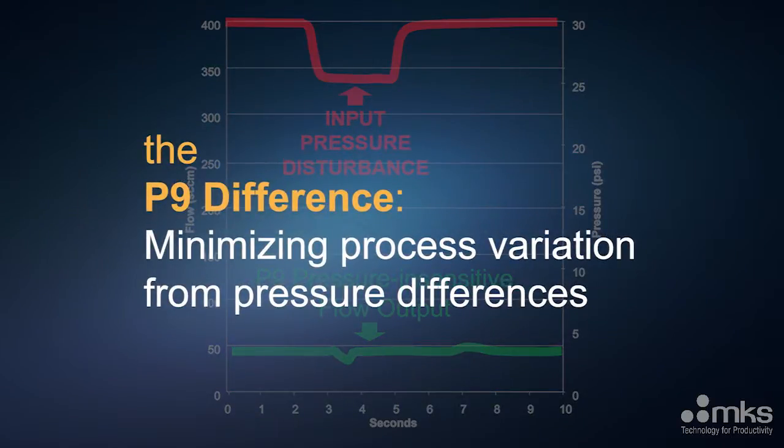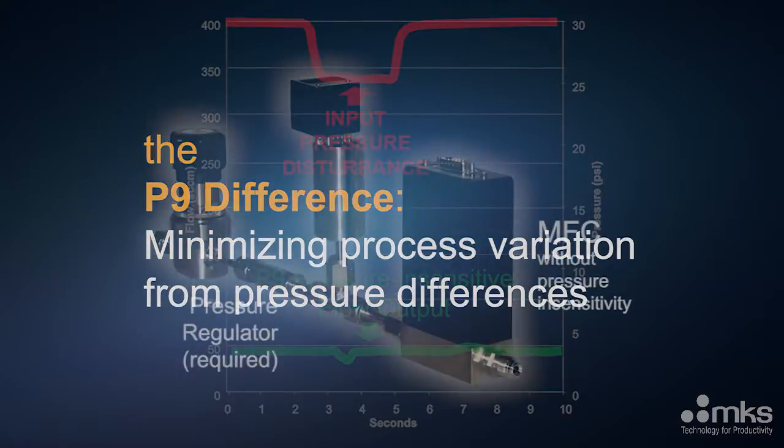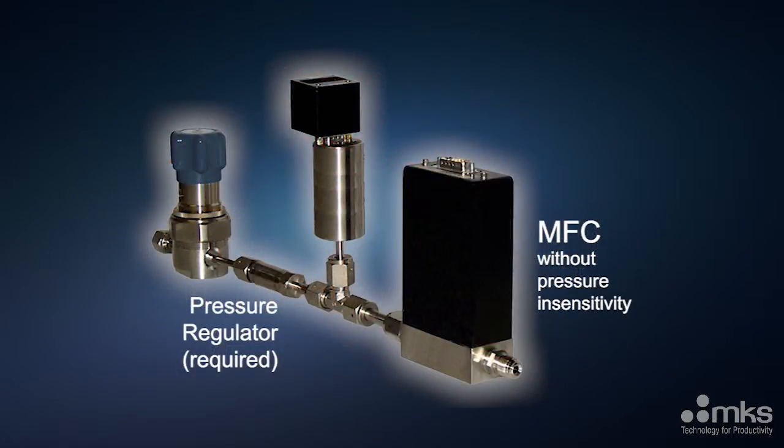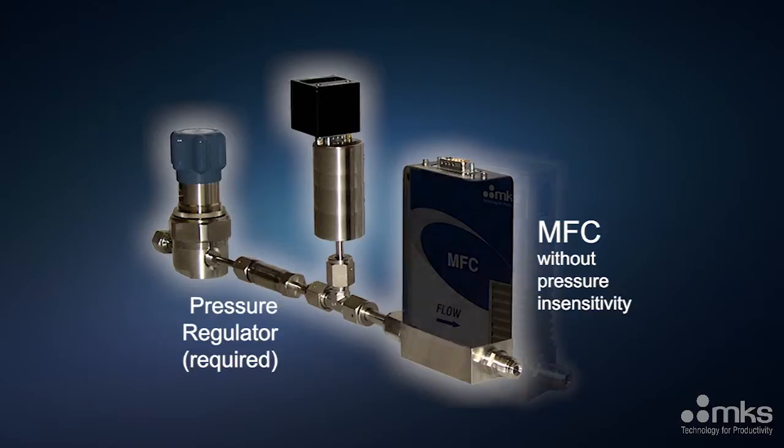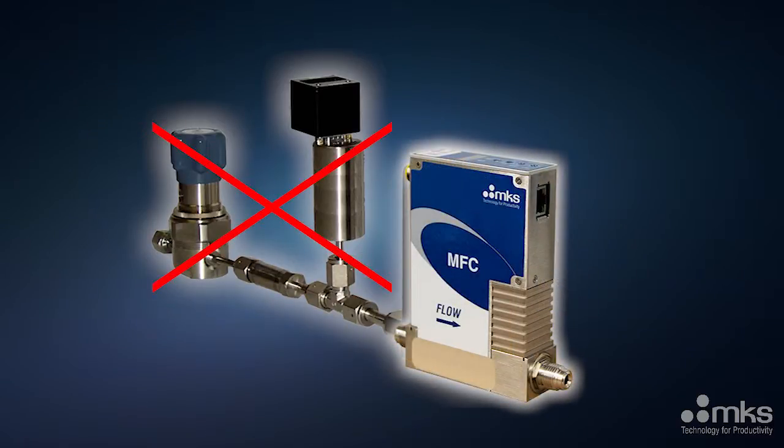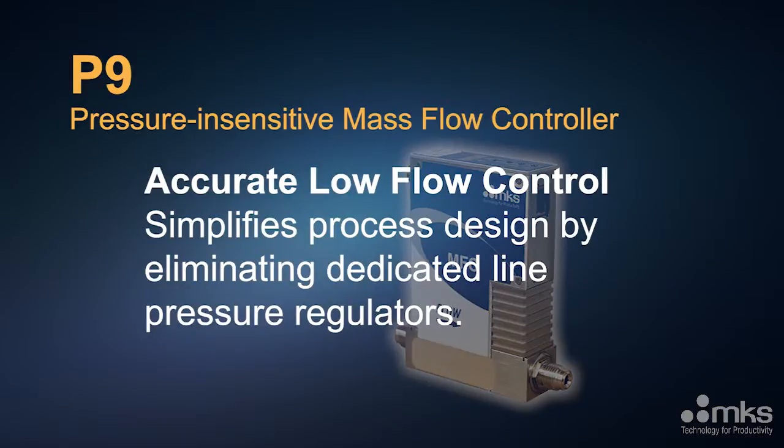The pressure-insensitive P-9 mass flow controller minimizes the effect of pressure disturbances on flow. For low flow applications such as semiconductor etch or MOCVD, the pressure-insensitive P-9 MFC provides accurate flow control without the need for additional dedicated line pressure regulators.